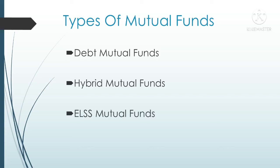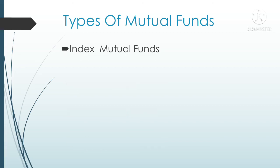The next type is ELSS mutual funds — ELSS stands for Equity Linked Saving Scheme. The amount invested in an ELSS mutual fund scheme can be shown in income tax returns and tax can be rebated. The next type is liquid mutual funds, where the mutual fund house invests your money in money market instruments like government treasury bills, commercial paper, and certificates of deposit.